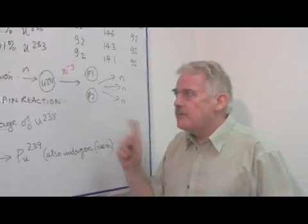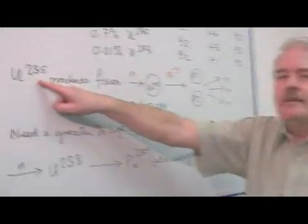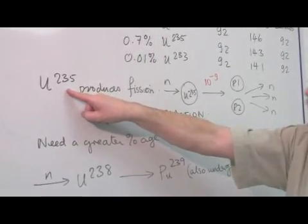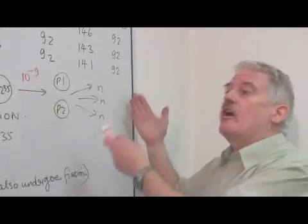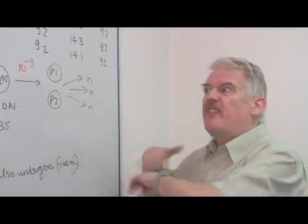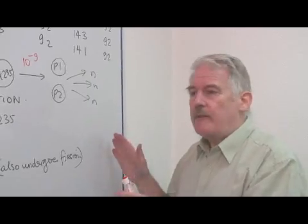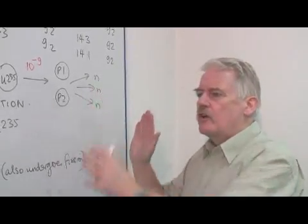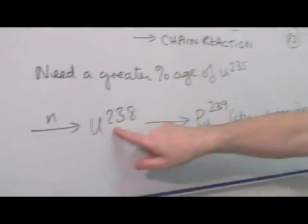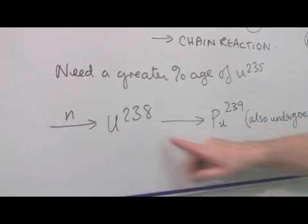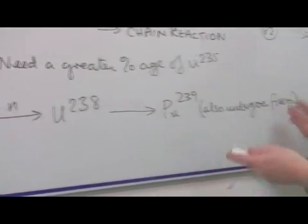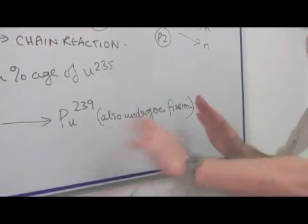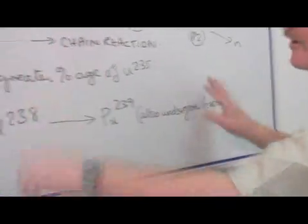But the problem is that uranium is not uranium-235. Less than 1% of it is this. So actually, less than 1% of these neutrons will produce other fission reactions and therefore it'll fizzle out. Nothing will happen because most of these neutrons are absorbed by uranium-238 to produce plutonium-239, which undergoes fission under different circumstances, causing the whole thing to fizzle out.